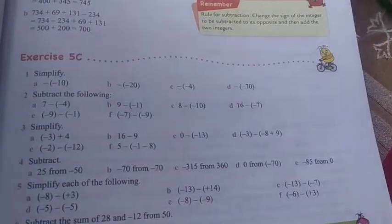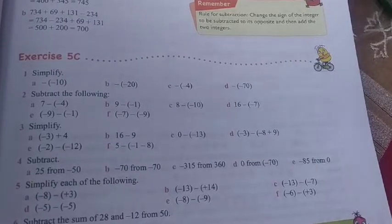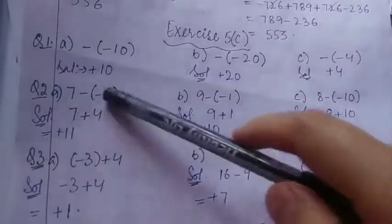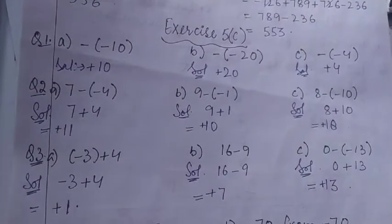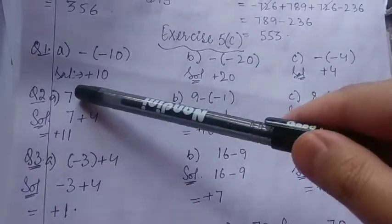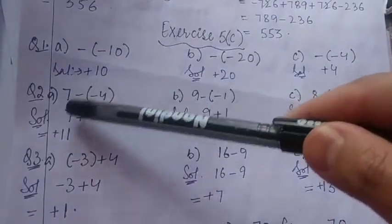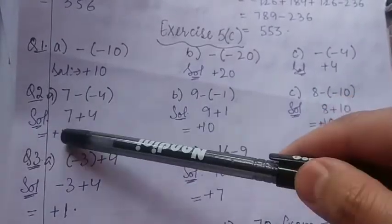And question number 2 is subtract. The first part is 7 minus minus 4. See, this is 7 minus minus. See here are two signs. Okay, so we have to reduce that into 1. I know that minus into minus is plus. So it means minus minus will be plus here and here it will be 4. So 7 plus 4 will be 11.